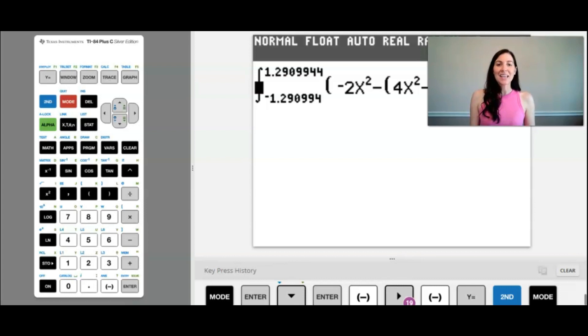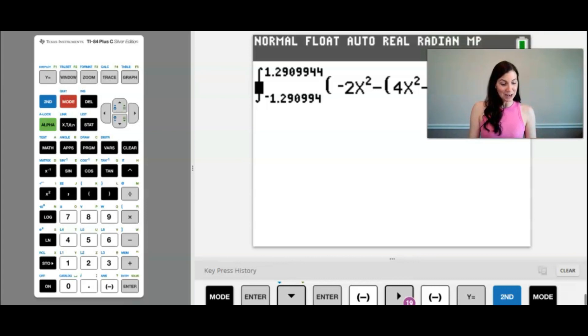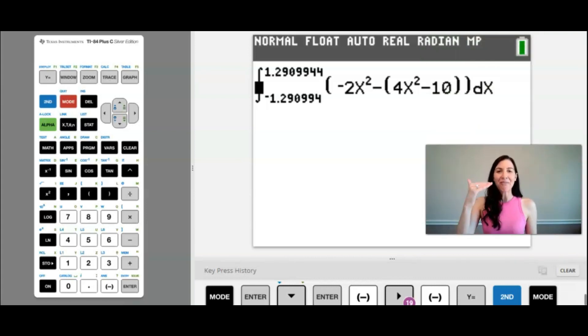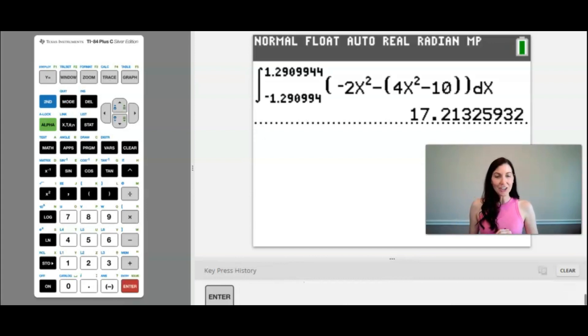And here it is, I've typed it in from the lower bound of -1.29 etc to the upper bound of the top function minus, and it looks like I'm in the way so I'm just going to move myself right down here. You can see the top function minus the bottom function dx and with an enter here there is my answer.